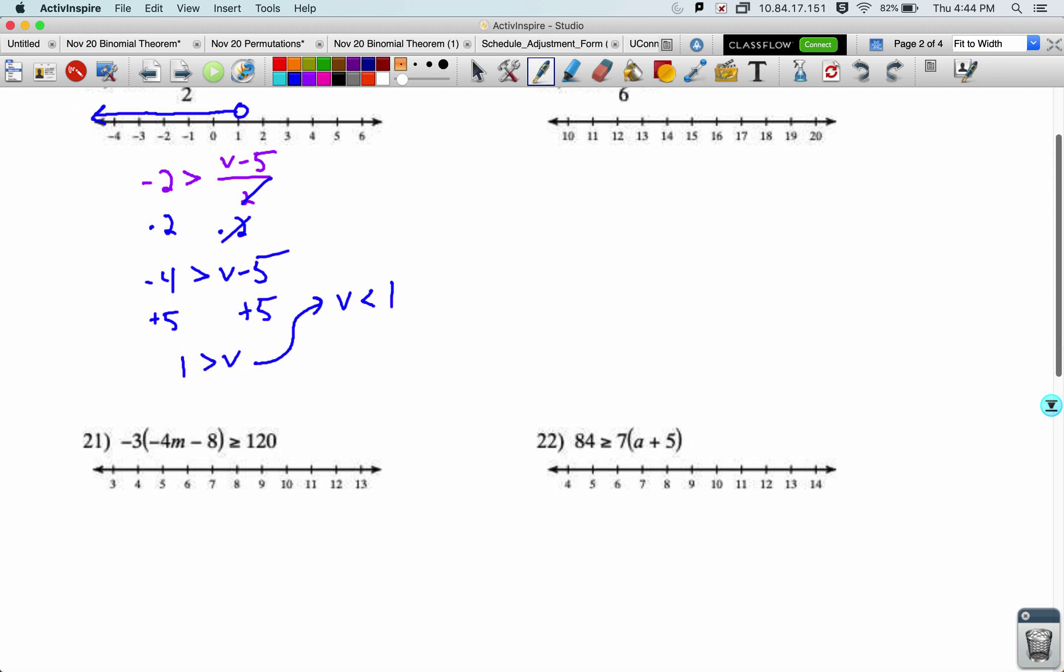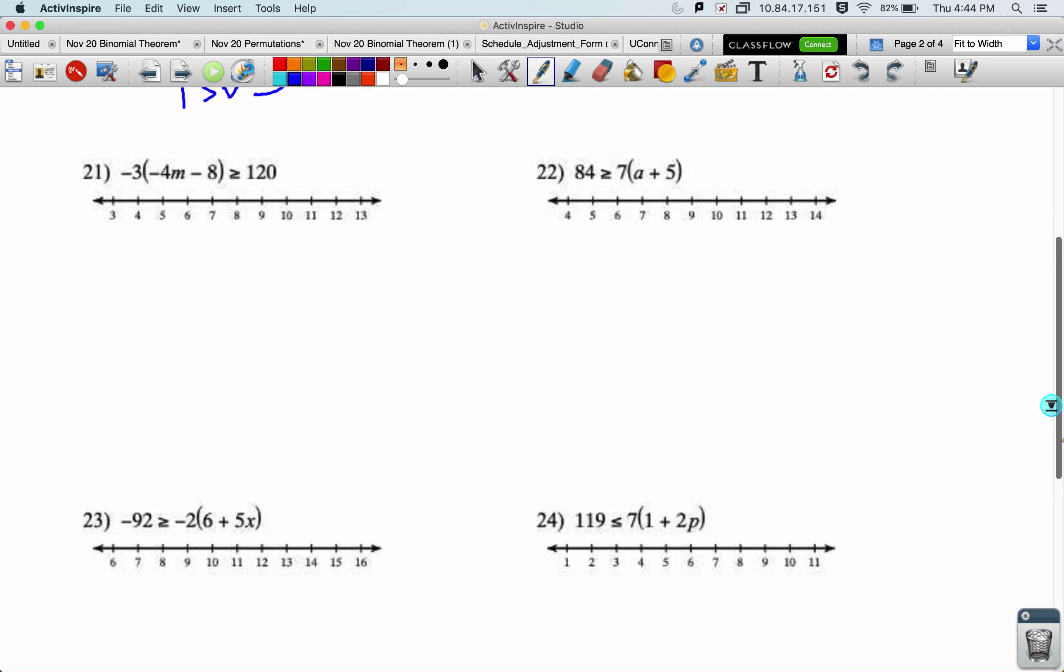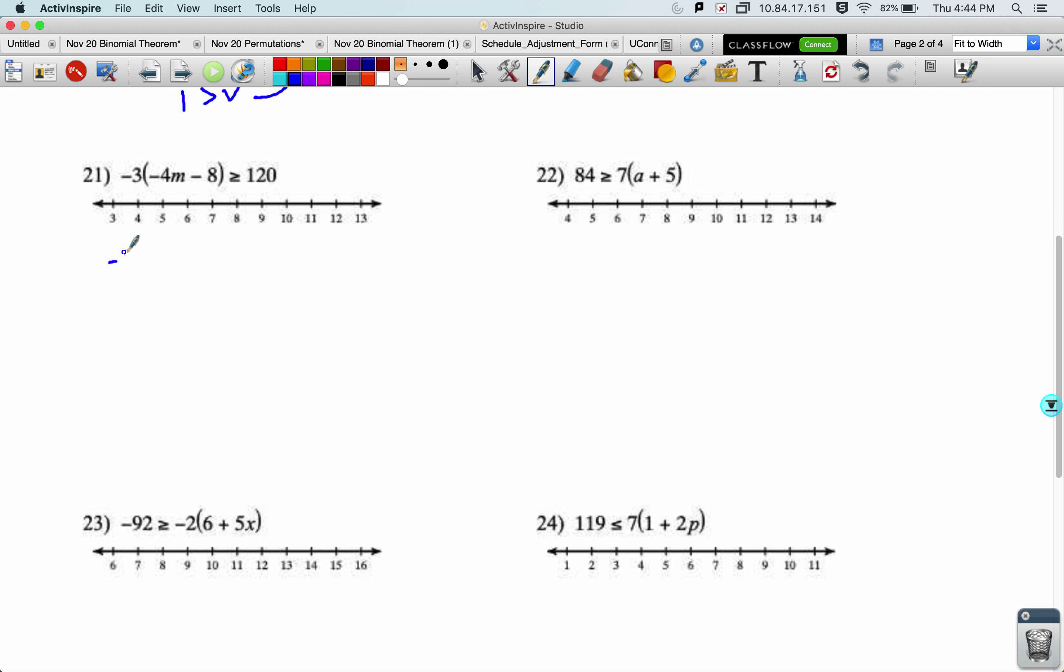All right, we've got some parentheses down in problem 21. Negative 3 times negative 4m minus 8. It's greater than or equal to 120.